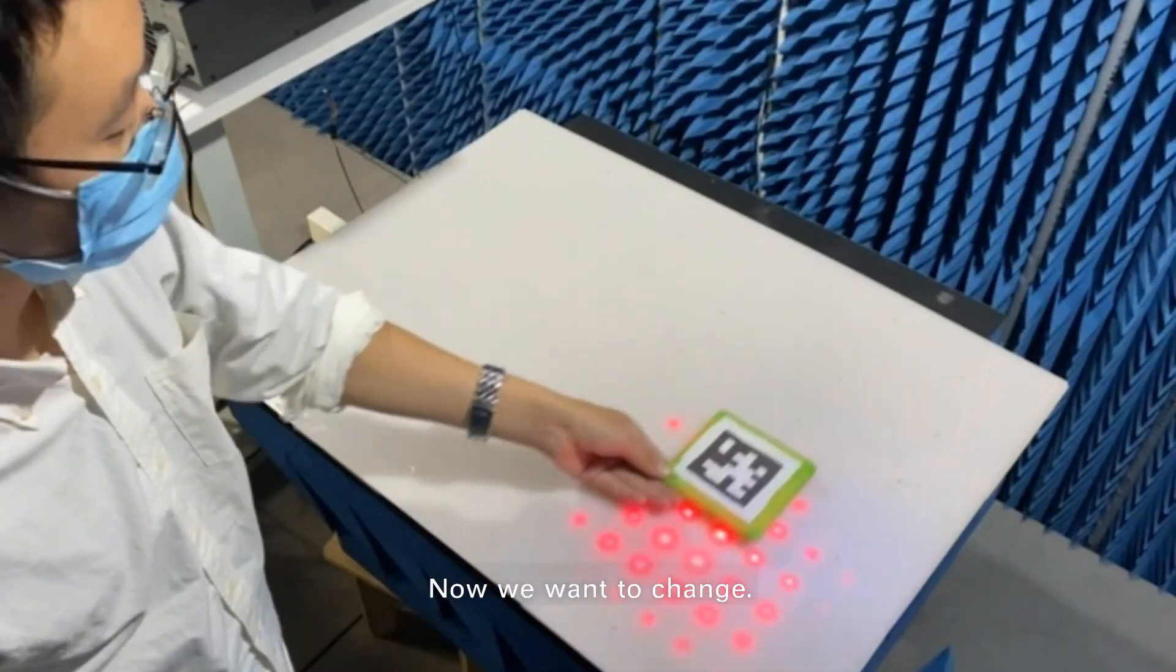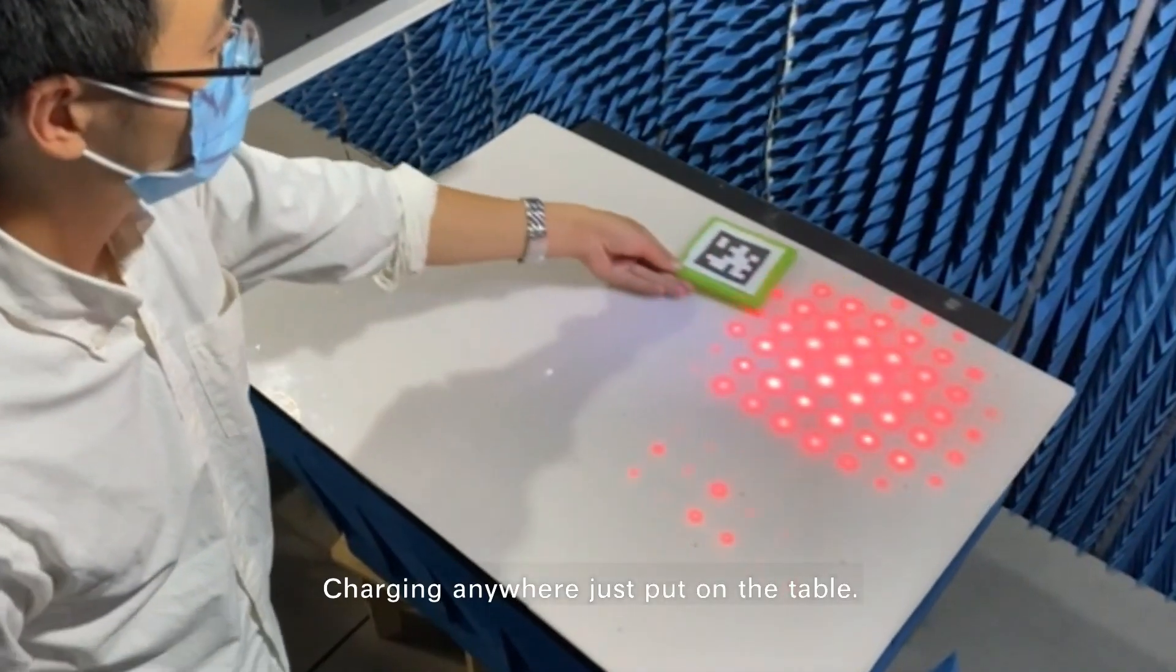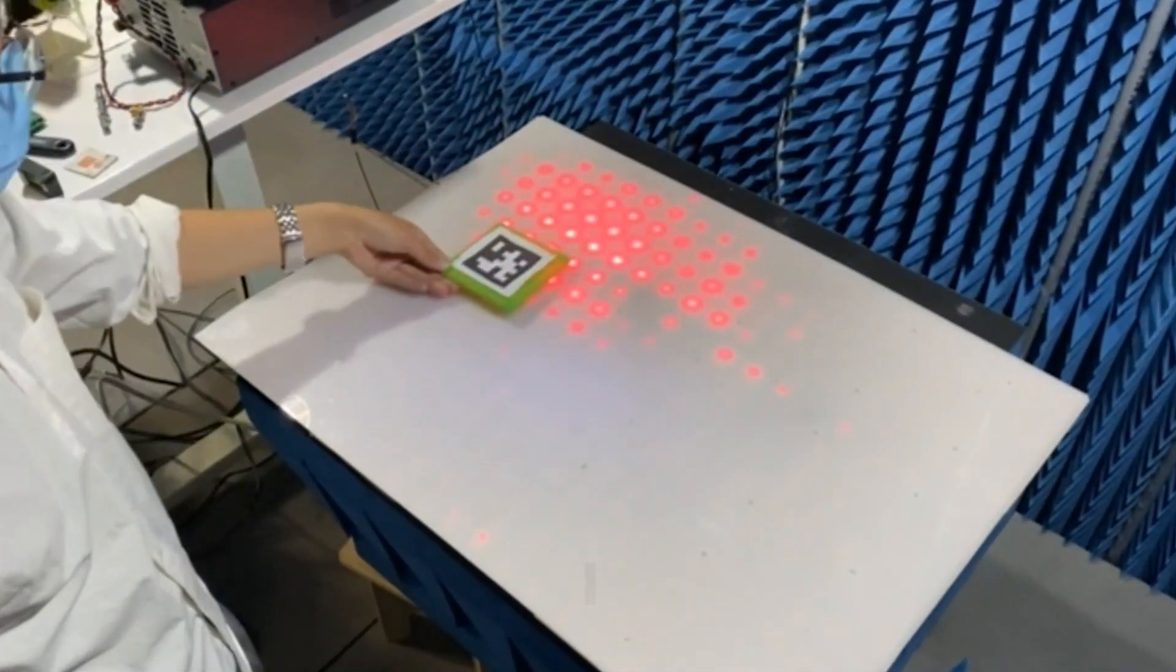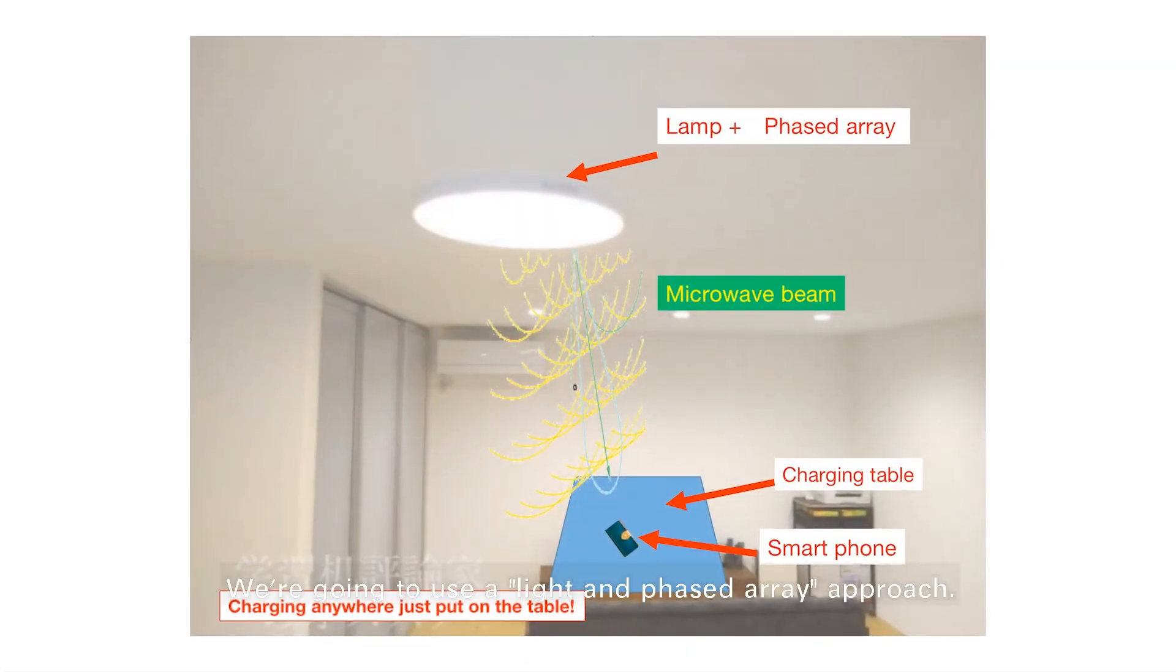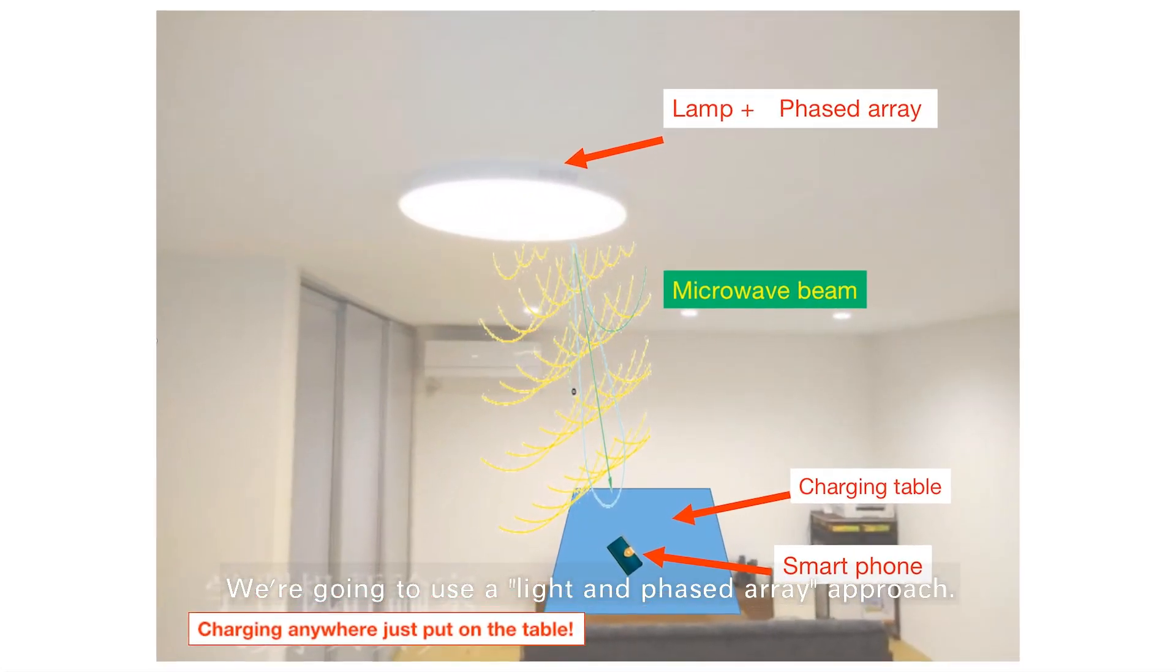Now we want to change charging. Charging anywhere, just put on the table. We're going to use a light and phased array approach.